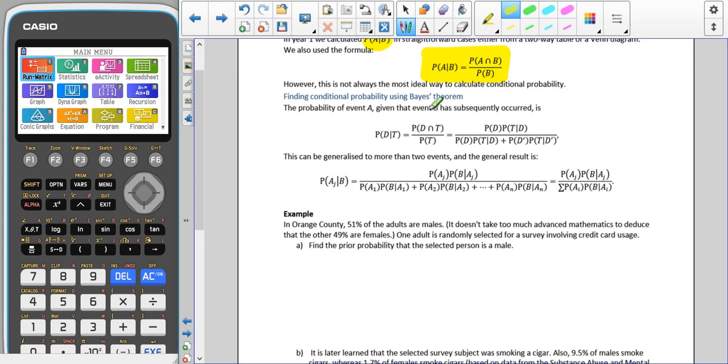So if we have the probability of D given T, this is the way that we would have figured out in the first year. But we could also use Bayes' theorem. Now, in the formula booklet, this is the version of Bayes' theorem that is given. This is on page 5 of the formula booklet.